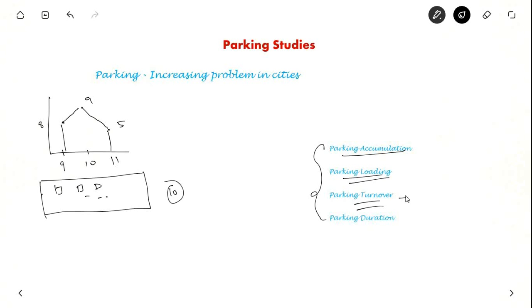Parking turnover is nothing but the parking volume divided by total number of bays. Suppose at nine o'clock eight vehicles are parked and number of bays are ten. So point eight is the parking turnover.